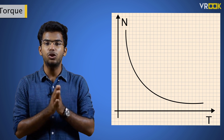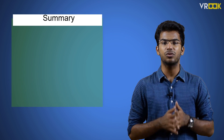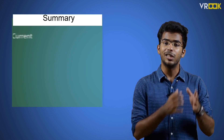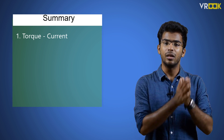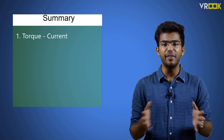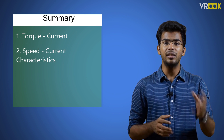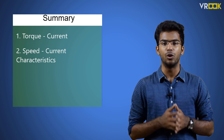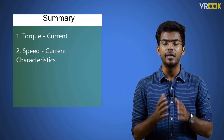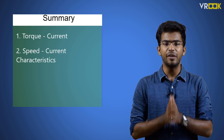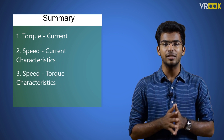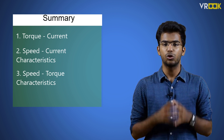That covers the speed-torque characteristics and concludes our discussion on the characteristics of a series motor. Summing up, we have three characteristics: first, torque-current characteristics, which indicates that a series motor is the best choice to lift or move heavy loads quickly. Second, speed-current characteristics, which states that a series motor should always be started with some mechanical load, else it will reach dangerously high speed and damage the motor. Third, speed-torque characteristics, which states that speed decreases with increasing torque.